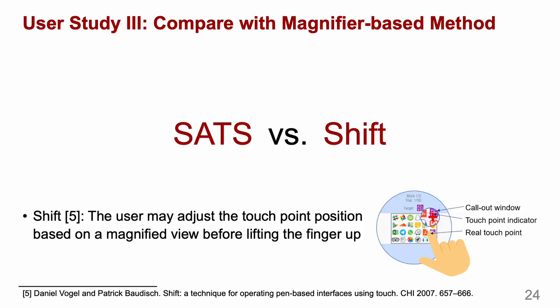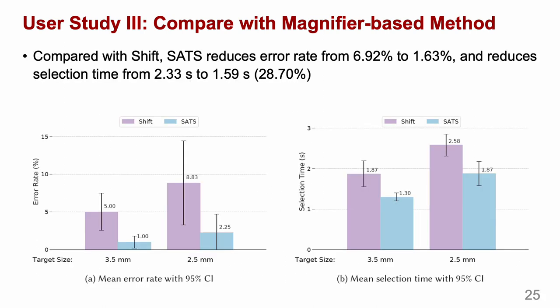Lastly, we compare SETS with a magnifier-based method, SHIFT. In SHIFT, a call-out window showing the magnified view underneath the finger can be triggered when the user touches the screen. Before lifting the finger up, the user can move the finger to adjust the touch point position. From the results, we can see that SETS outperforms SHIFT in both error rate and selection time.